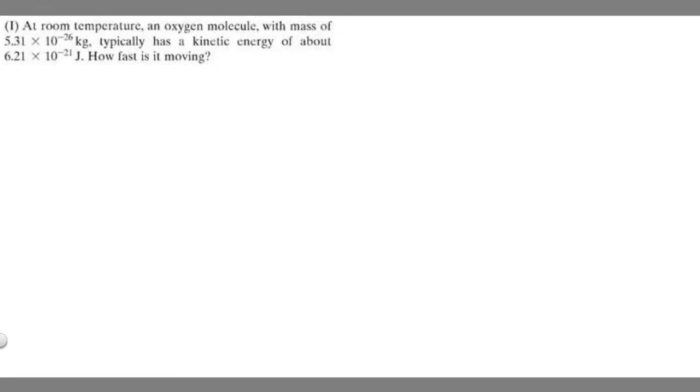In this problem, we're told at room temperature, an oxygen molecule with a mass of 5.31 times 10 to the minus 26 kilograms typically has a kinetic energy of about 6.21 times 10 to the minus 21 joules. How fast is it moving?